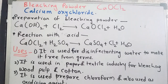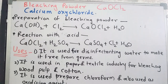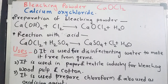We have two reactions for bleaching powder: preparation and reaction with acid. For preparation, Ca(OH)2 — calcium hydroxide — reacts with Cl2 chlorine gas to give CaOCl2, that is bleaching powder, along with water. When bleaching powder reacts with acid: CaOCl2 plus H2SO4 gives CaSO4 plus Cl2 plus H2O.